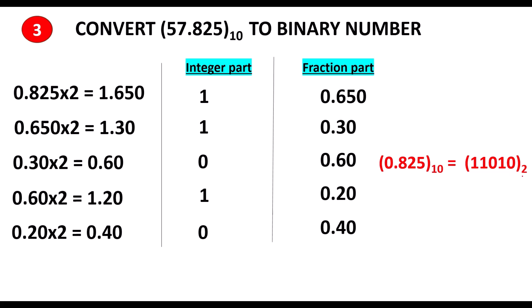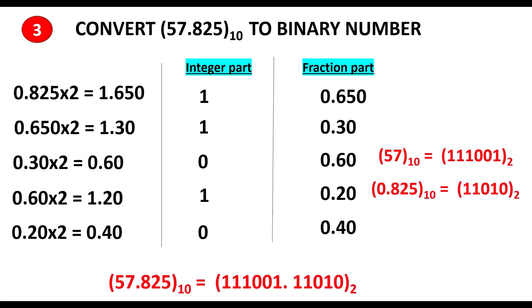Now we found the binary for 57 as well as for 0.825. We should combine these two to find the complete answer. For 57 it is 111001, and for 0.825 it is 11010. We combine them, so this is the final binary equivalent for 57.825.